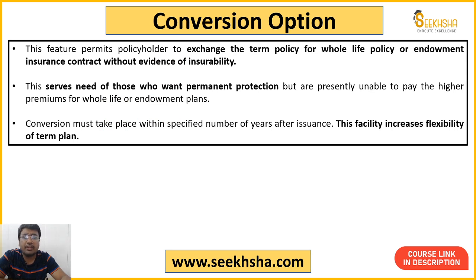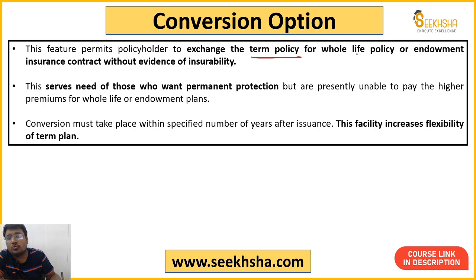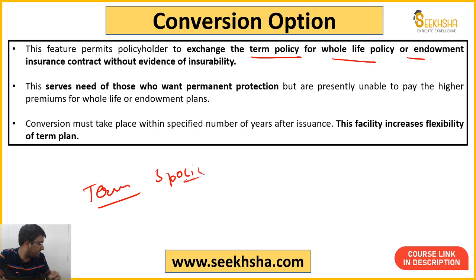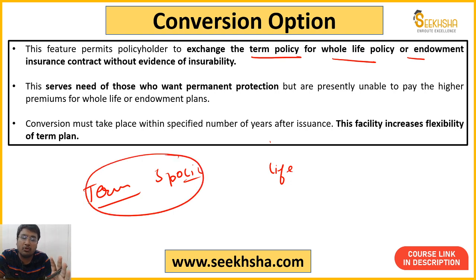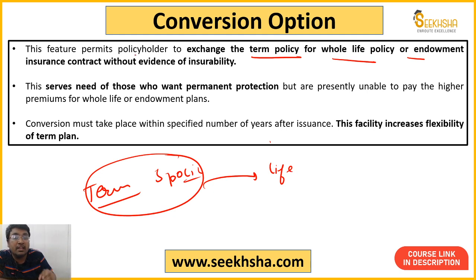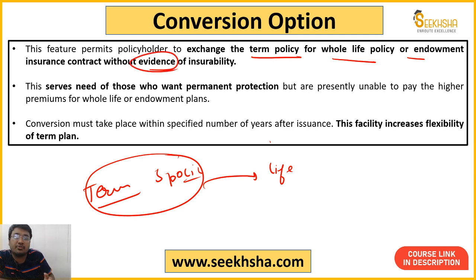Conversion Option is basically where you have a term policy — 5 year, 10 year, or 15 year policy — and you can convert it into a whole life policy or endowment insurance contract. For example, if you took a 5-year policy and now want to make it a whole life policy, normally you'd have to redo all health check-ups and medical evidence. But if your policy had a conversion option clause, you don't need to provide evidence again — no repeat medical check-ups required. This also helps when your health has deteriorated. If you go for a new whole life policy, the insurance company might refuse or charge very high premiums. The conversion option helps in such cases too.